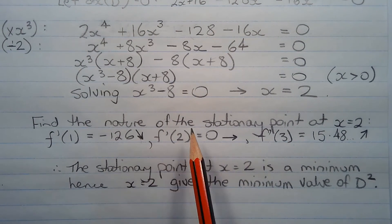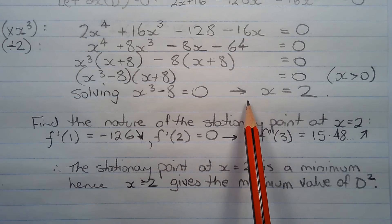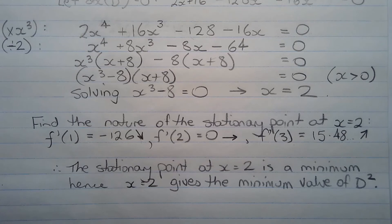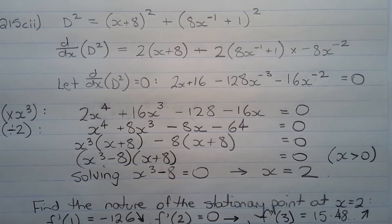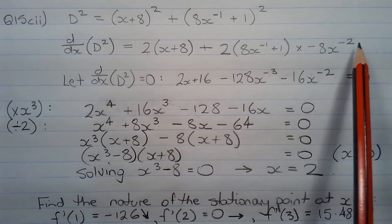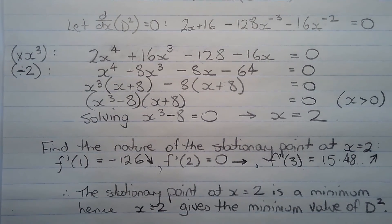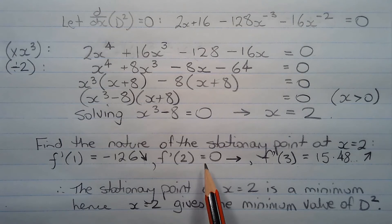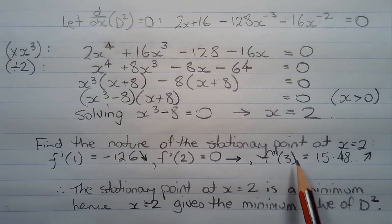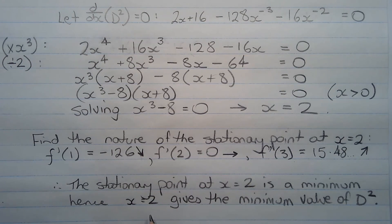Next we need to find the nature of that stationary point by testing the value of the derivative on either side of x = 2. Choosing x = 1 and x = 3: substituting x = 1 into the derivative gives −126, which is a negative gradient. f′(2) = 0 since that's our stationary point. f′(3) equals approximately 15.48, which is a positive gradient. Therefore the stationary point at x = 2 is a minimum. Hence x = 2 gives the minimum value of d squared.